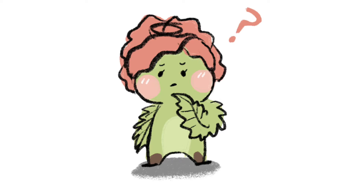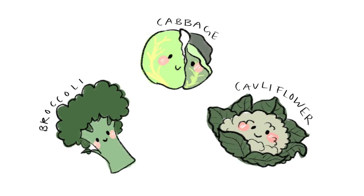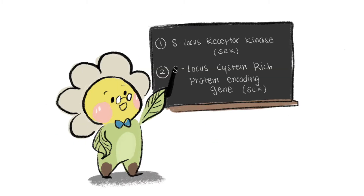But I still don't understand how the pistil can figure out if a pollen is compatible or not. I mean, they look the same, don't they? They do. But on a molecular level, plants have their own unique way to discriminate between different pollen. For example, the Brassicaceae family, such as cabbage, cauliflower, and broccoli, uses a receptor kinase signaling pathway in the pistil to reject incompatible pollen.